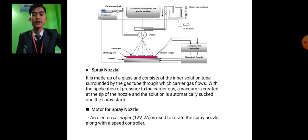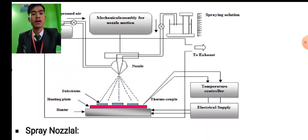First one, spray nozzle. It is made up of glass and consists of the inner solution tube surrounded by the gas tube through which carrier gas flows. With the application of pressure to the carrier gas, a vacuum is created at the tip of the nozzle and the solution is automatically sucked and the spray started. Motor for spray nozzle: an electric car wiper, 12 volt to 2 ampere, is used to rotate the spray nozzle along with the speed controller.